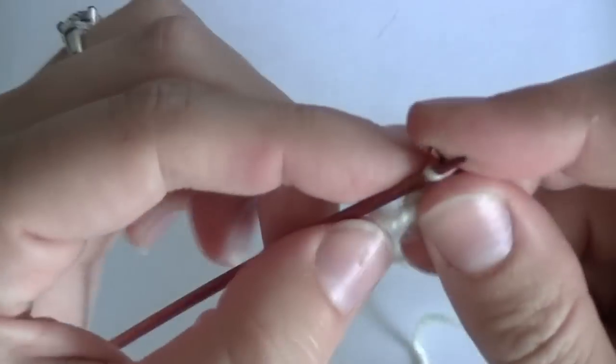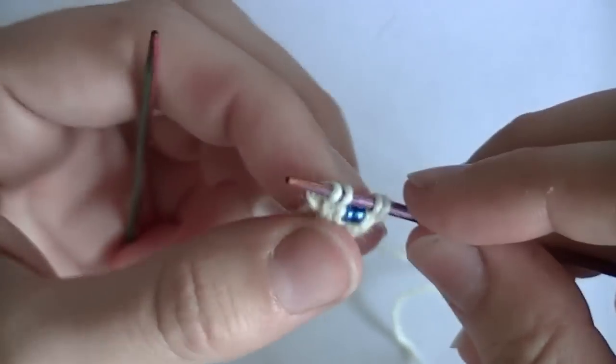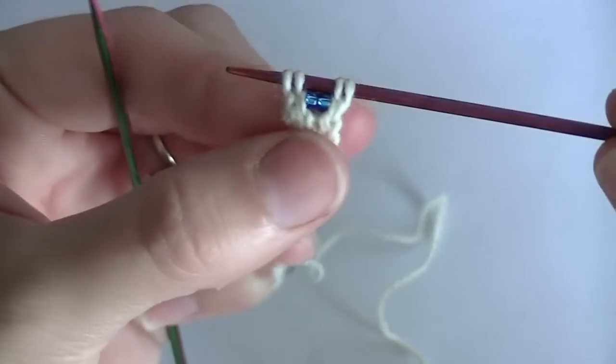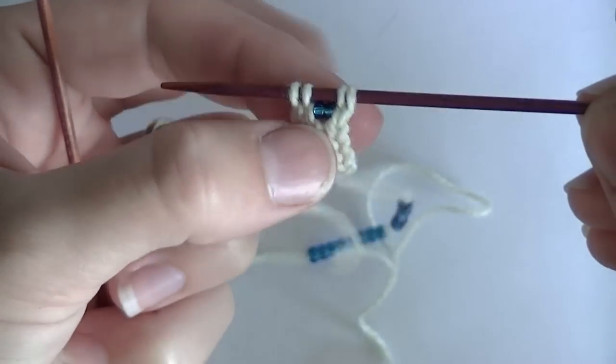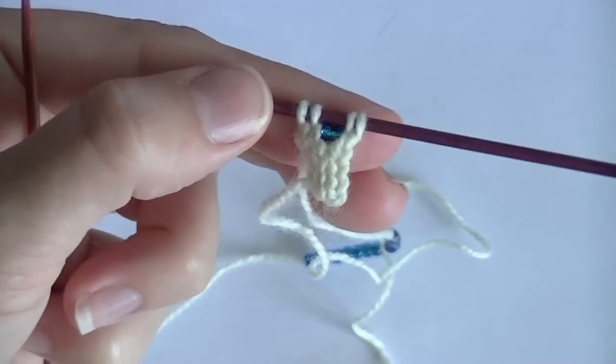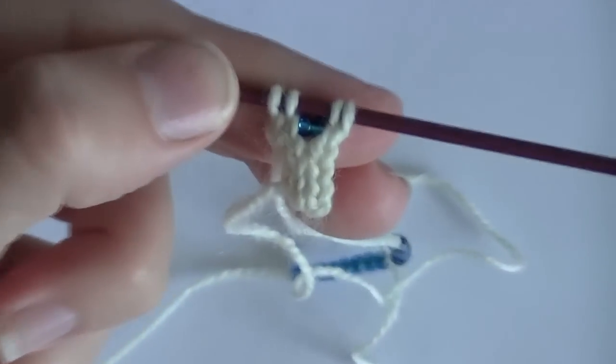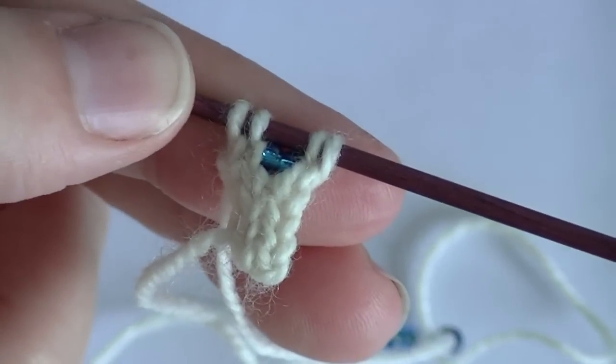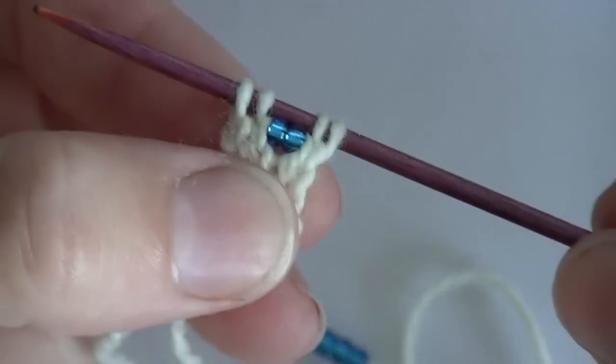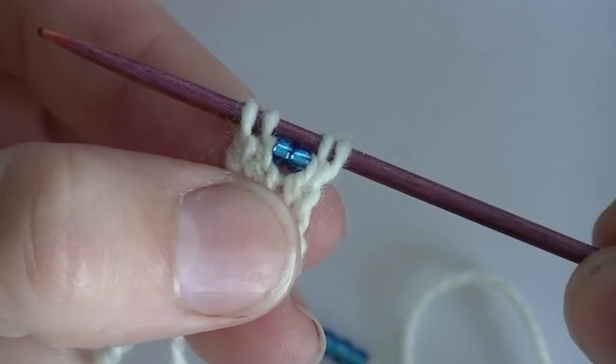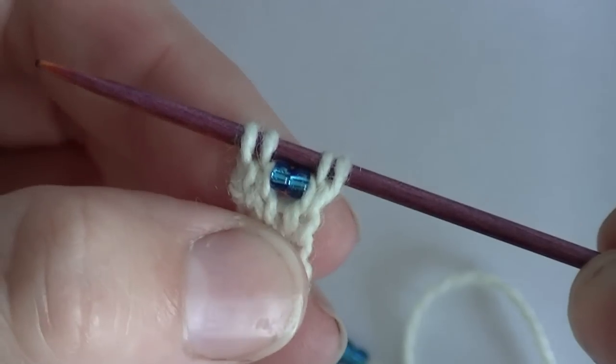Now those two beads are locked in place. So, let me knit the last stitch on there. You can see that now we have knit these two beads right into the stitch. It's as simple as that.